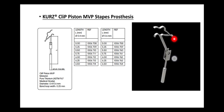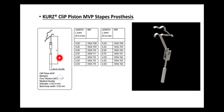This is the Kurtz Clip Piston MVP Stapes Prosthesis in its various dimensions. Here we have an overall overview of the various titanium ossicular reconstruction prostheses.